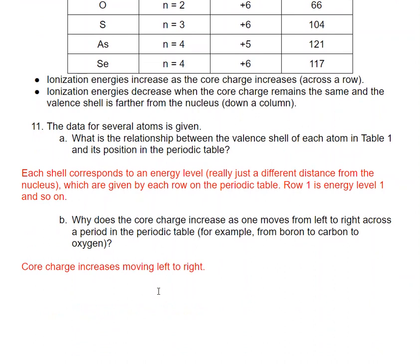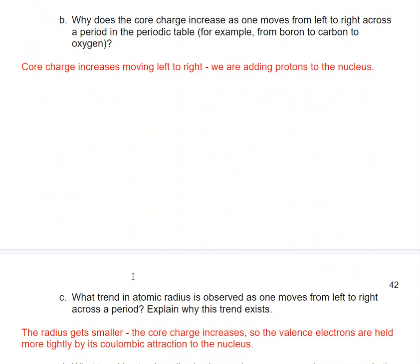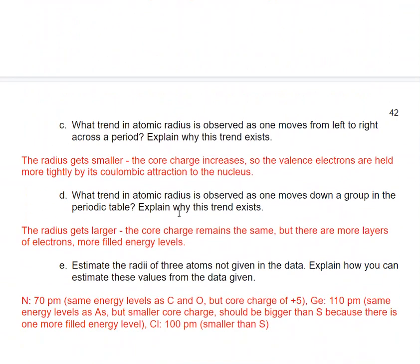Core charge increases as we move from left to right because we are adding additional protons to the nucleus. The atomic radius gets smaller moving left to right because the core charge becomes more positive, so valence electrons are held more tightly by Coulombic attraction. Moving down a group, the core charge stays the same but there are more filled energy levels, so the radius gets larger.